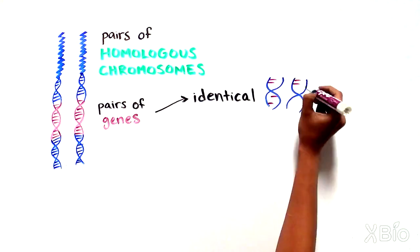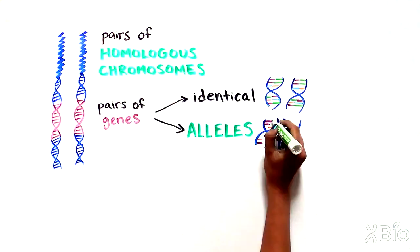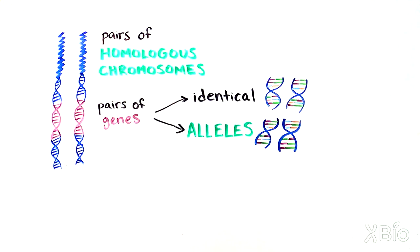A pair of genes may be identical to one another, or they may differ subtly in their DNA sequences, in which case they are called alleles. Sometimes different alleles still give rise to the same phenotype.